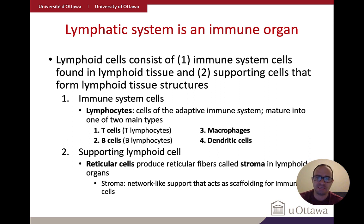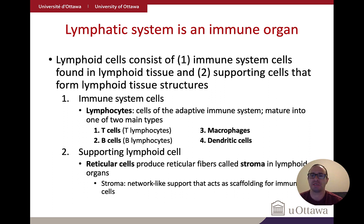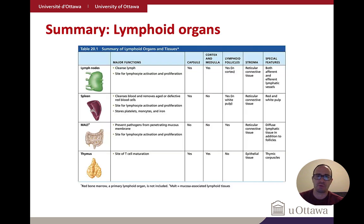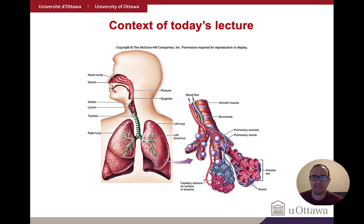The lymphatic system is also an immune organ, with T-cells, B-cells, macrophages, and dendritic cells working together in a supporting structure made by reticular cells called a stroma, performing a surveillance function. We discussed secondary lymphoid organs such as lymph nodes, spleen, and MALT, as well as primary organs such as the thymus and red bone marrow.